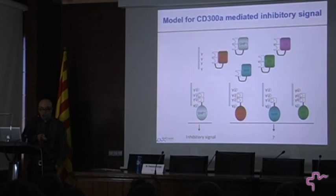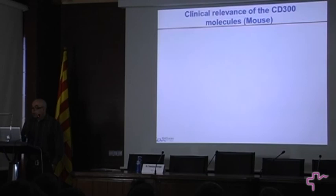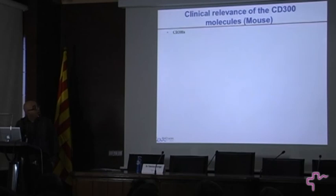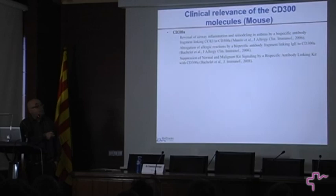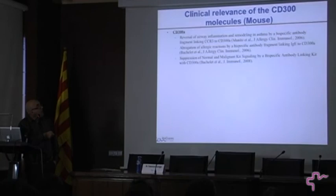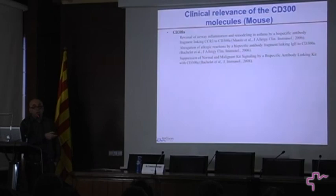What is the clinical relevance of the CD300 molecules? In mouse, there are a couple of papers — some published by a group in Israel — using bispecific antibodies targeting both CD300A and another molecule such as CR3, KIT, or IgE. Using this bispecific antibody, they were able to reverse airway inflammation in a model of asthma, and the tissue remodeling happening in those mice is very important data. They were also able to abrogate allergic reactions in another model, demonstrating that targeting this receptor may have therapeutic importance in diseases like allergy or asthma.